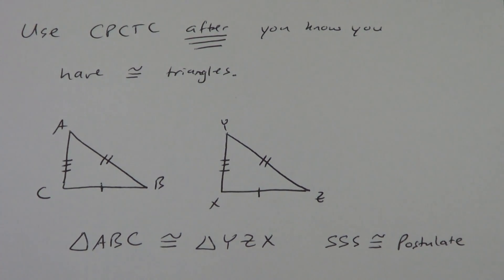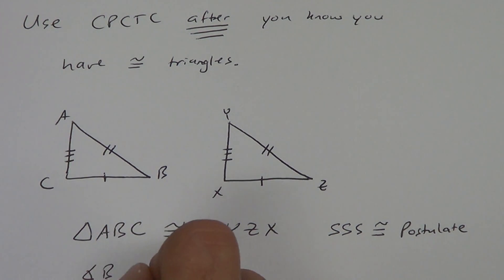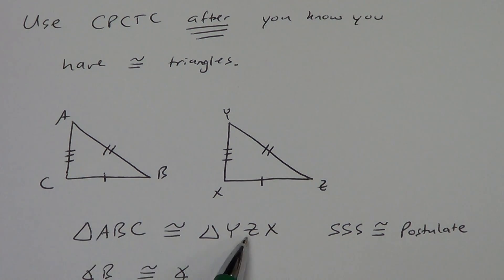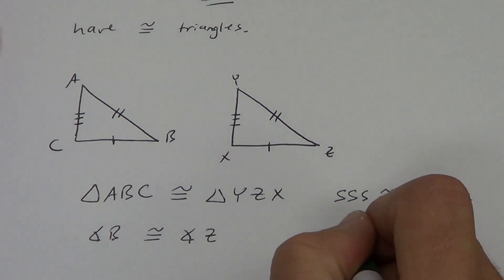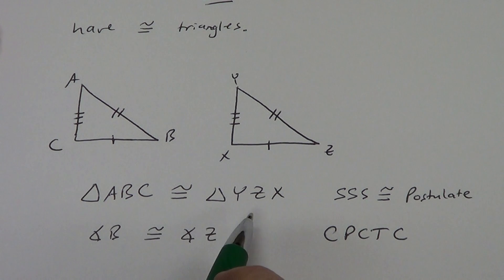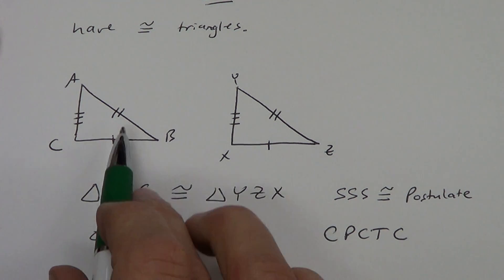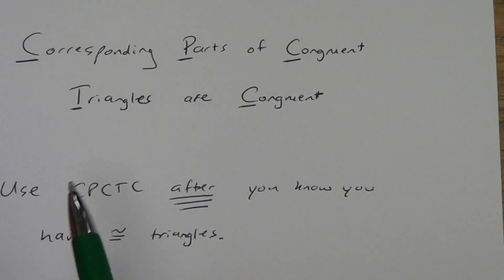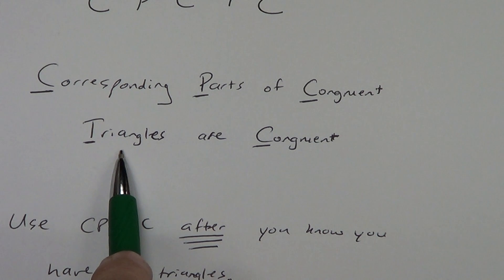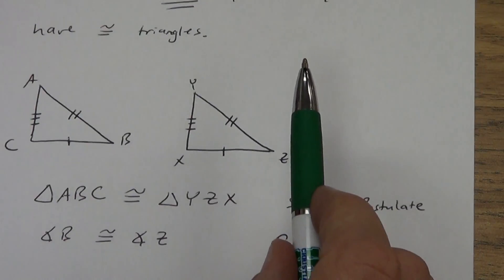Now, CPCTC is the next thing we use. We already knew all the sides were congruent, but we don't know anything about the angles. CPCTC helps us there. We could say angle B is congruent to angle Z — because B is the second letter and Z is the second letter, that's why the order is very important. Why is angle B congruent to angle Z? CPCTC. B and Z are corresponding parts — they're in the same position, across from the three-marked side, or between the sides marked with one and two. They are corresponding parts of congruent triangles, so they must be congruent.